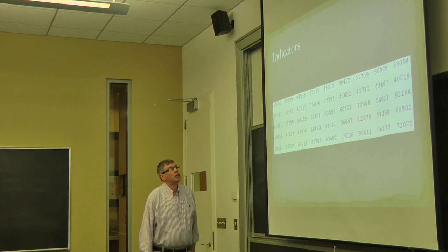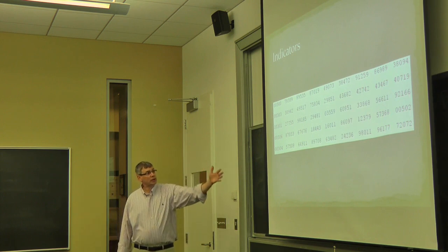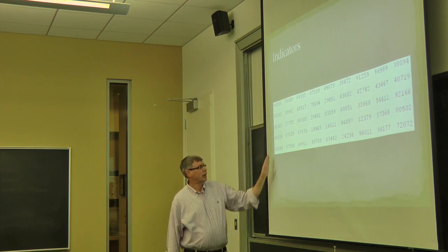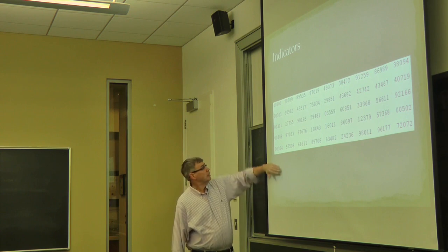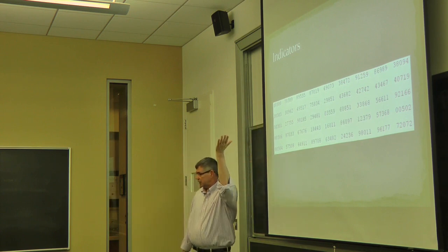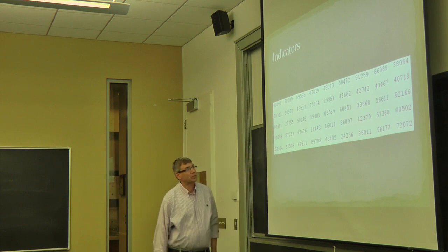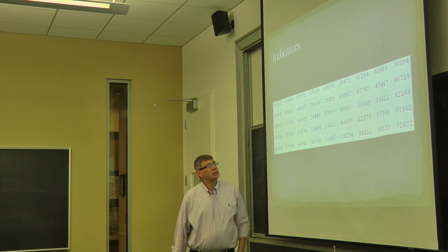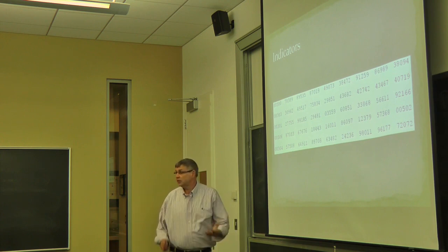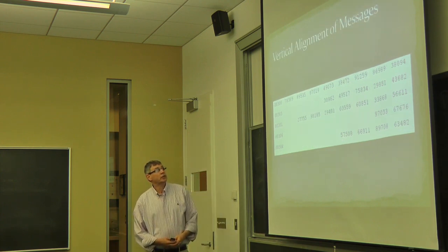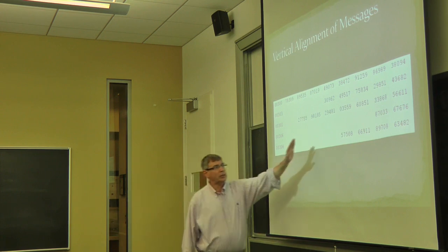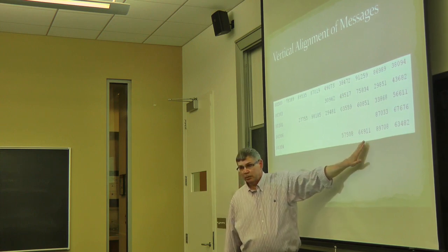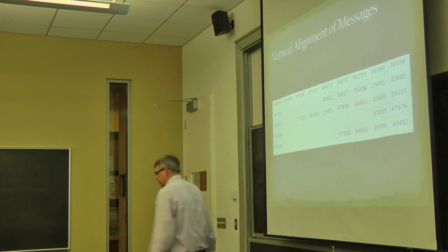So one of the first tasks that the code breakers did was to try to break the indicator system. This is a very simple one to break. There are five messages here. Most of the numbers look random, but in each one, the beginning of the message has some pattern to it. And this is obviously the indicator block. 003 is a page number. 0 is a row number, so this is probably the top row. And this is a column number. If the indicator system is broken, then we know for each of these where the additives begin, even if we don't know the additives. And we can arrange them vertically in columns so that, although I might not know what the additive is, I know that all of these were encrypted with the same additive. And all of these were encrypted with the same additive because they're aligned in depth.